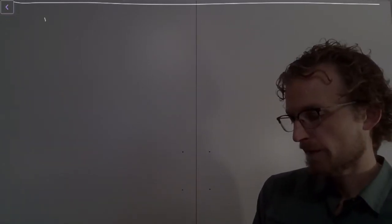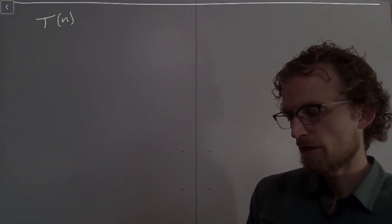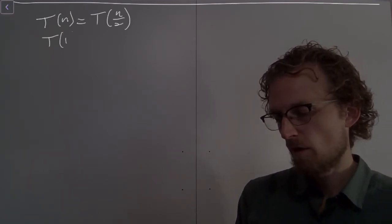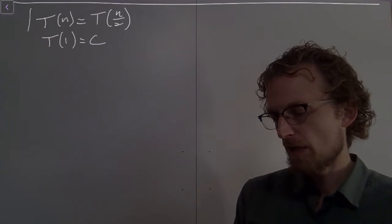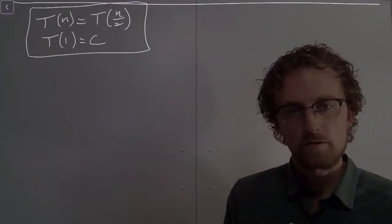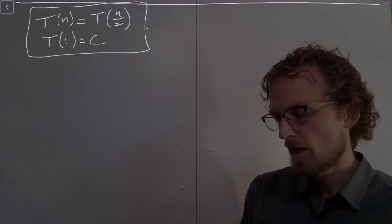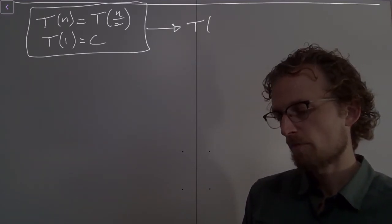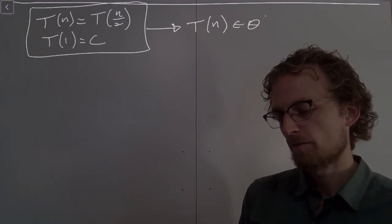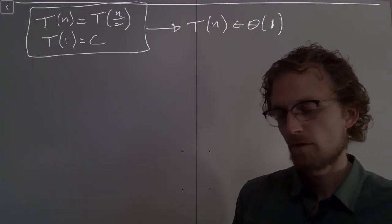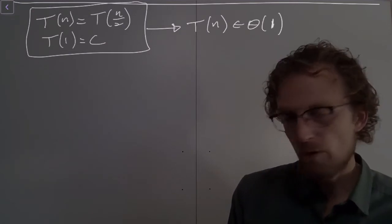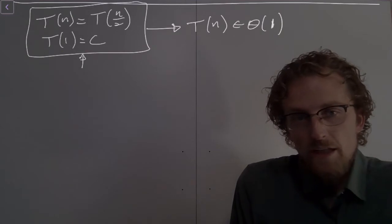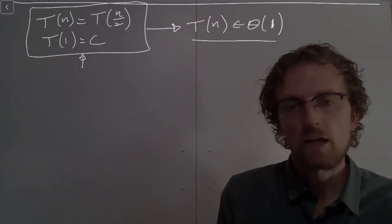So last time we showed the following: we showed that this recurrence relation has a constant runtime. T of 1 equals C. This is a complete, well-posed recurrence relation. We showed that this gives rise to a constant time characteristic. So if you ever run into an algorithm that has this recurrence relation, now you know whatever that C is, no matter what that C is, it's a constant time algorithm.